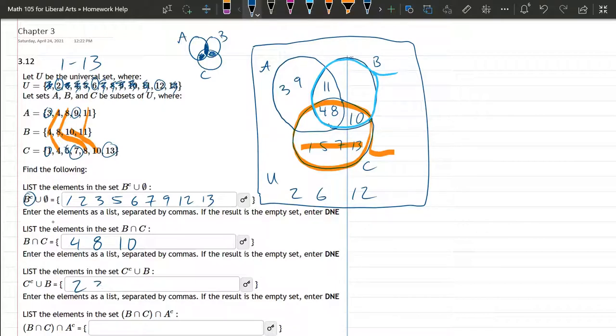So it's every number that's not 1, 5, 7, and 13. So it's 2, 3, 4, skip 5, 6, skip 7, 8, 9, 10, 11, 12, and skip 13. So let's get rid of these for the next part.